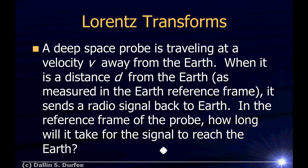A deep space probe is traveling at a velocity V away from the Earth. When it is a distance D from the Earth, as measured in the Earth reference frame, it sends a radio signal back to Earth. In the reference frame of the probe, how long will it take for the signal to reach Earth? There are several ways to work this. One way is to imagine that there happens to be some asteroid right next to the probe that's at rest with respect to the Earth when it sends its signal.